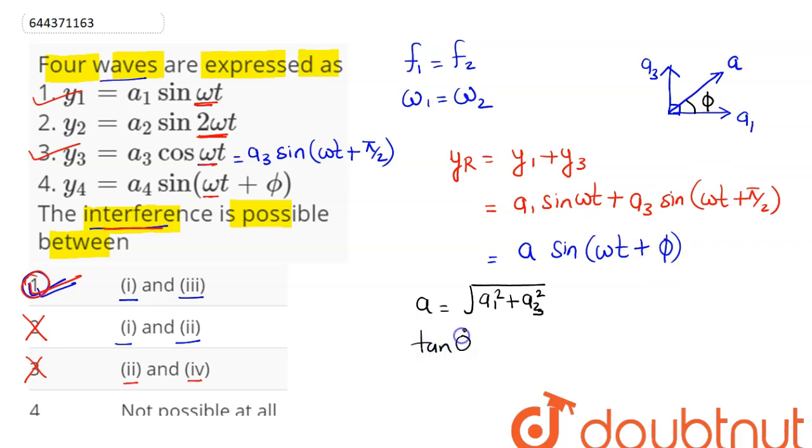And this φ, the angle made by the resultant with the x axis, can be written as tan φ = a3/a1. Hence on superposition this will be our resultant wave equation in which a and φ can be written by using phasor diagram concept. This is our answer.